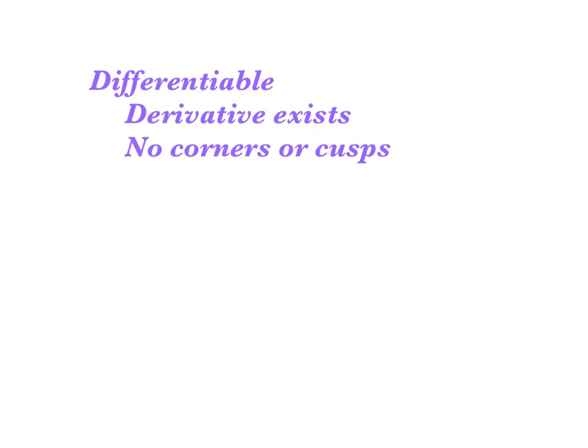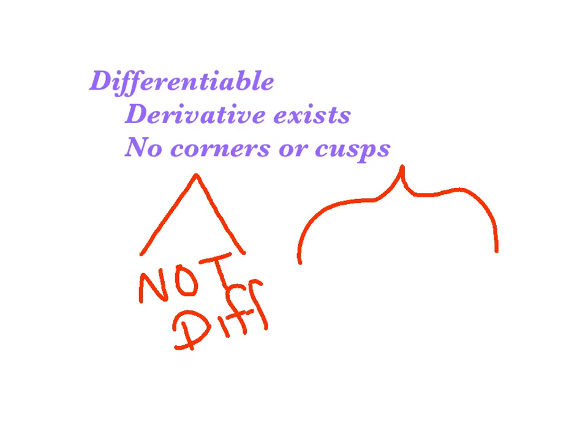So let's focus on the word differentiable. If something's differentiable, we're just saying that the derivative exists. And graphically, that would look like no corners or cusps. So I just want to be clear - a corner should be a right angle, and a cusp should be more of a pointy type thing. So this is my corner, and I would say this is not differentiable, and neither is this cusp.